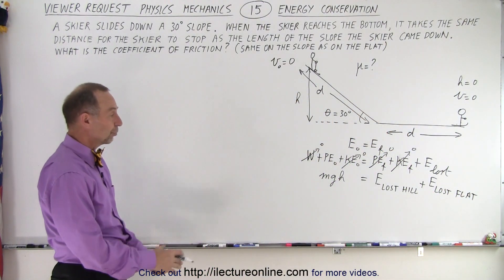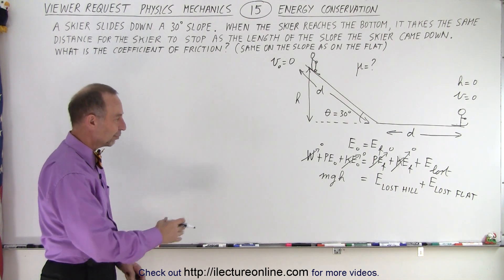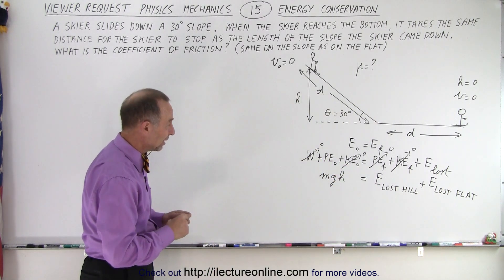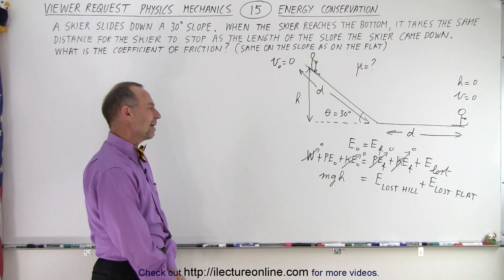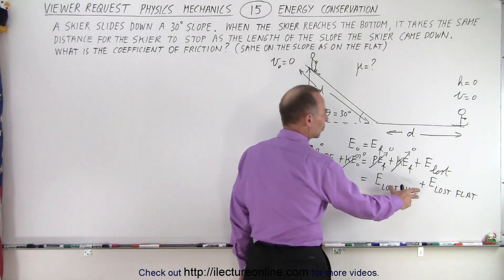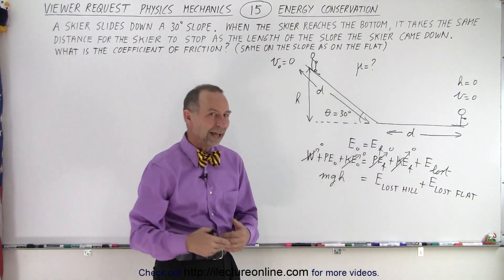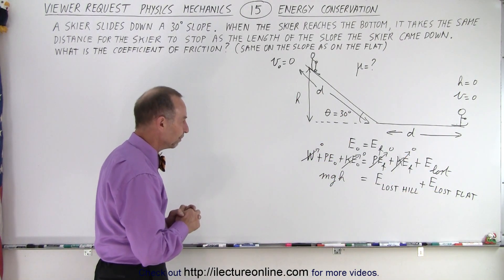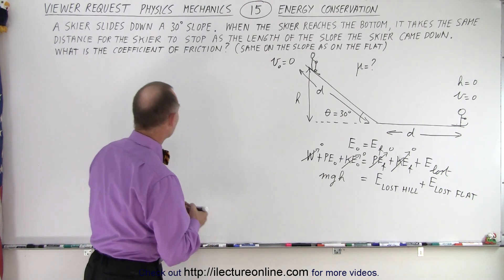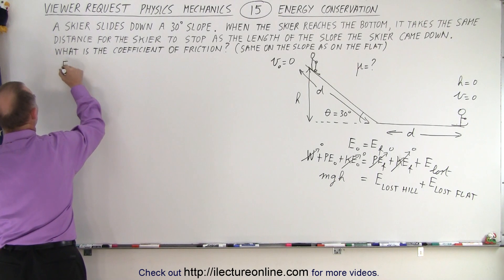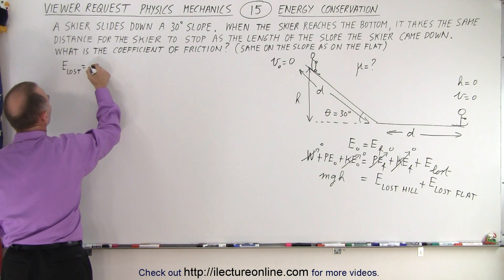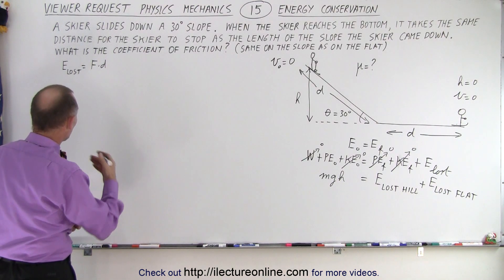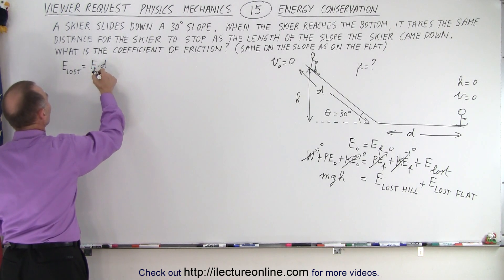The energy lost is the energy lost on the hill plus the energy lost on the flat portion. We need to convert a few things and figure out what h equals in terms of distance. The energy lost due to friction is force times distance — since the units are joules, units of energy — and it's the friction force times distance.